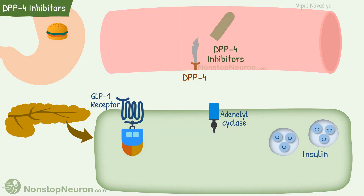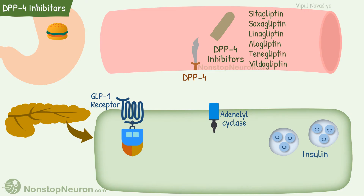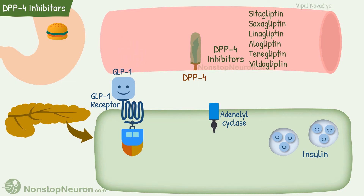Now let's see DPP-4 inhibitors. Drugs in this group are Sitagliptin, Saxagliptin, Linagliptin, Alogliptin, Teneligliptin, and Vildagliptin. These drugs inhibit DPP-4, so endogenously secreted GLP-1 is not degraded. Its effect on beta cells is therefore increased, and more insulin is released. Thus, DPP-4 inhibitors increase the effect of endogenous GLP-1.